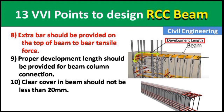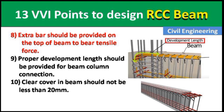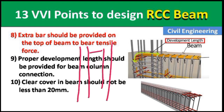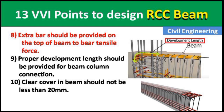Point 10: The clear cover in the beam should not be less than 20 mm. Clear cover is the distance between the outer surface of the concrete and the outer surface of the steel rod. For example, in a beam with embedded steel, this distance from the concrete face to the steel rod is the clear cover, and it must be at least 20 mm.